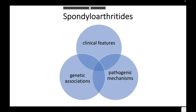If we read the textbook and create a mind map about what the spondyloarthritides actually are: these are a group of diseases with overlapping clinical features, genetic associations, and pathogenic mechanisms. That is why they are all lumped together under the umbrella of spondyloarthritides — a constellation of diseases sharing overlapping clinical features, genetic associations, and pathogenic mechanisms.